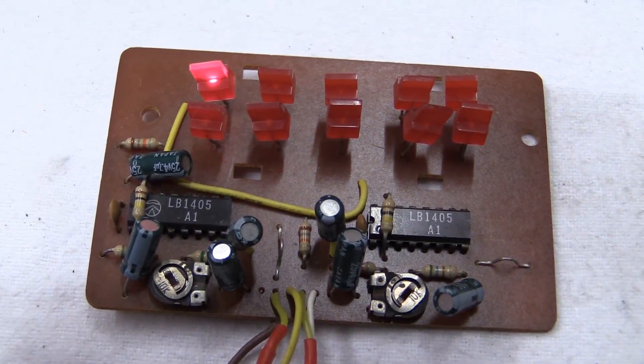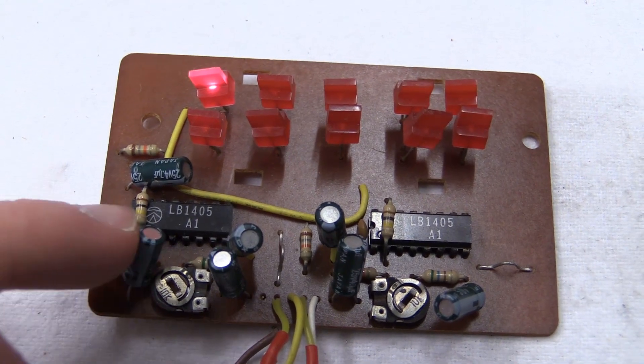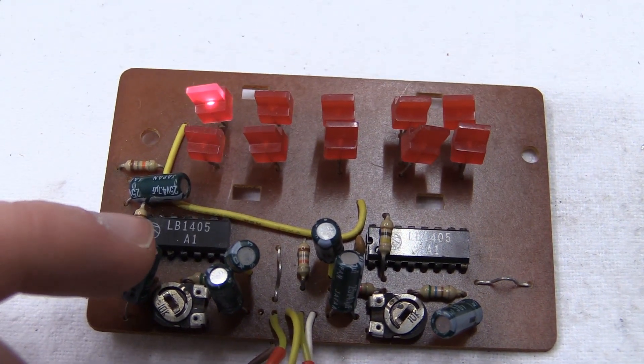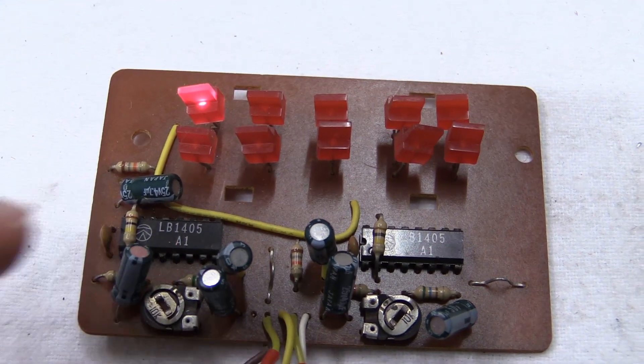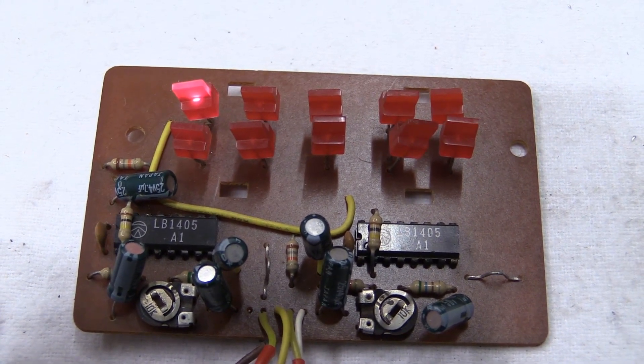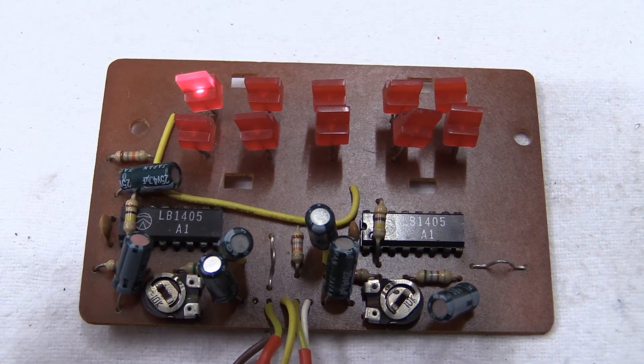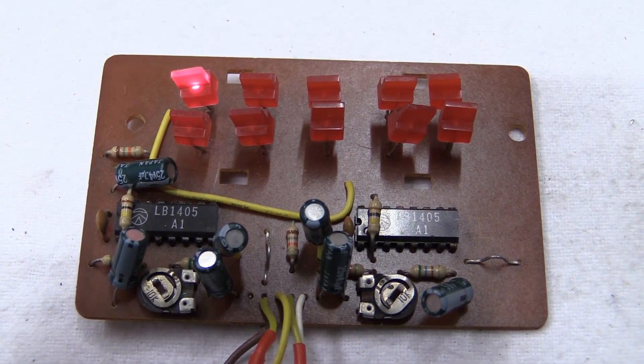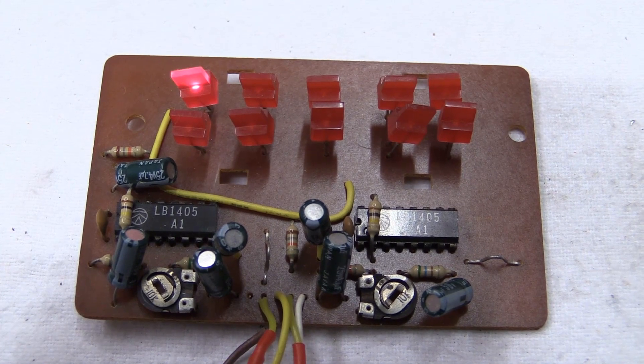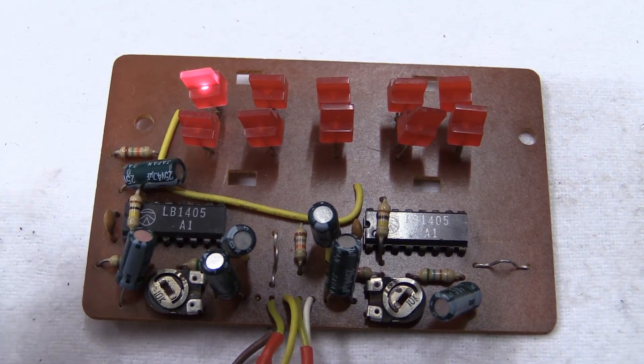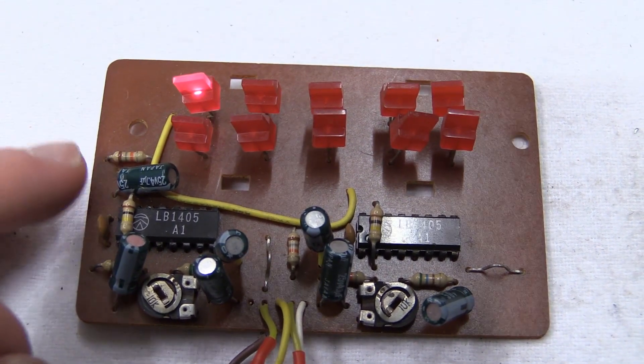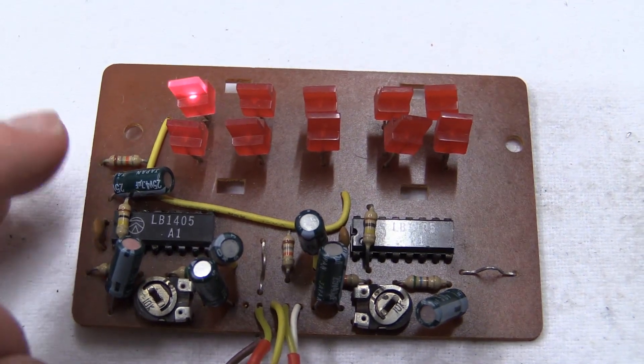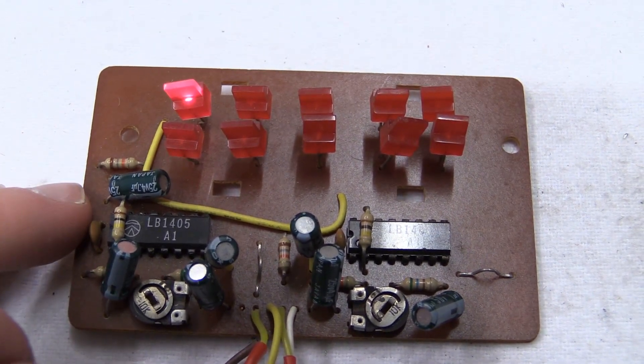This one also quite similar to what we've just seen before. It's using Sanyo LB1405 integrated circuits. So that's probably an older revision. And it definitely has to have a different type of input voltage range. Because the chips that we've seen before, or the modules we've seen before, they all took line-level inputs.